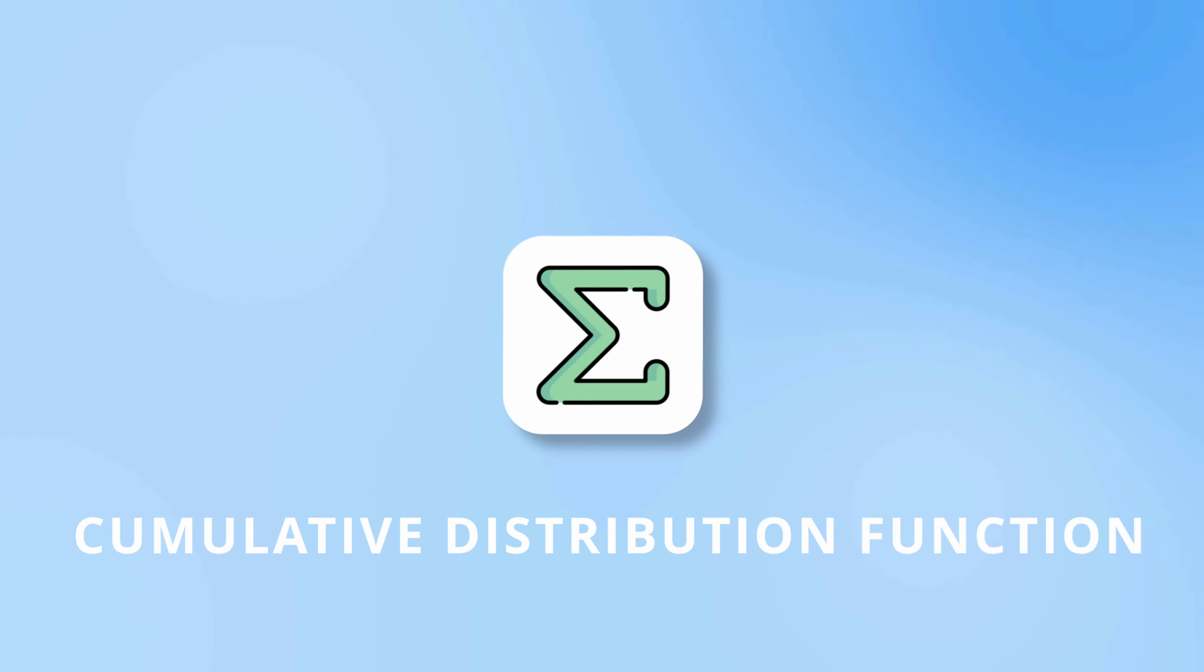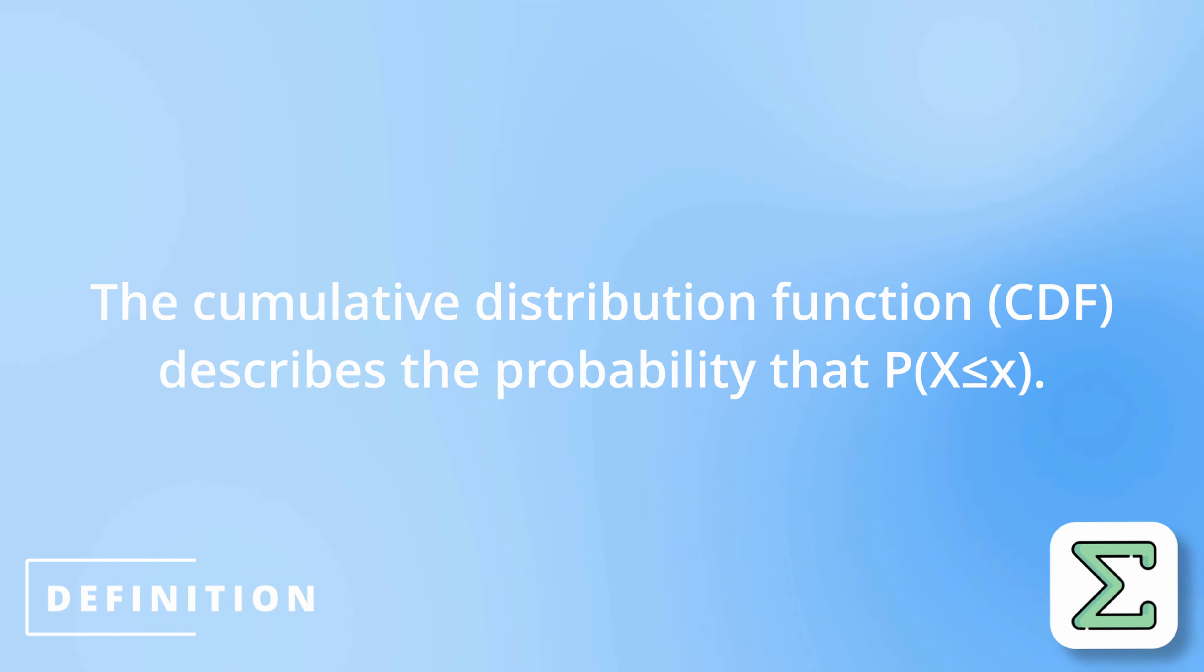From the probability mass function, we can then derive the cumulative distribution function. The CDF describes the probability that capital X will take on a value less than or equal to lowercase x. Going back to the coin flip example,